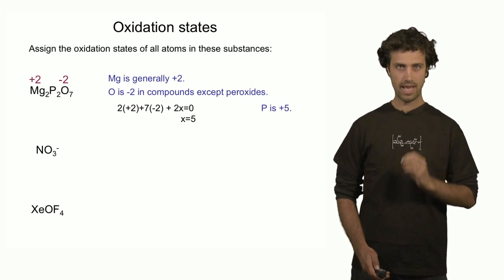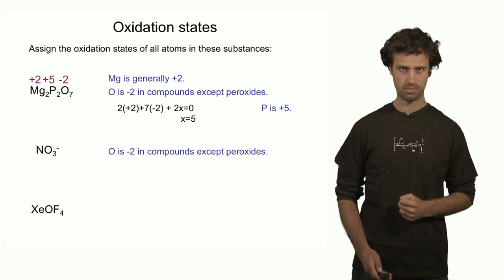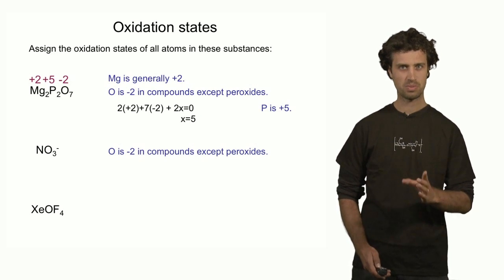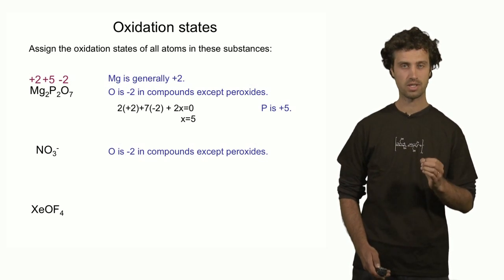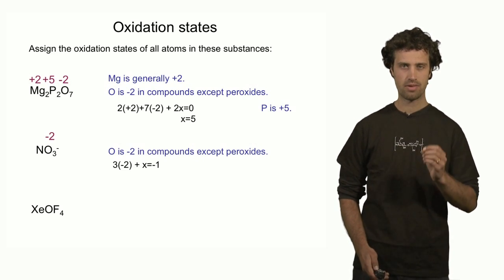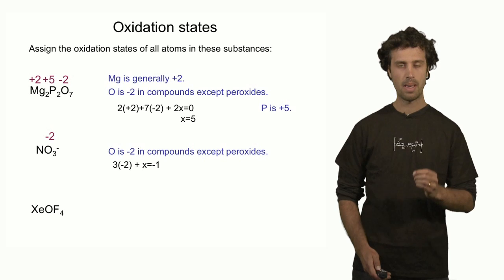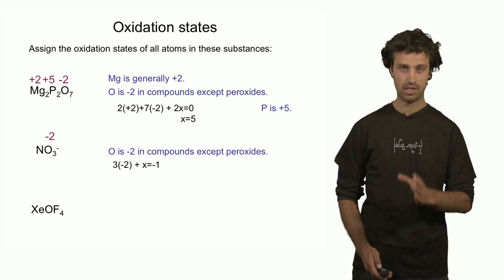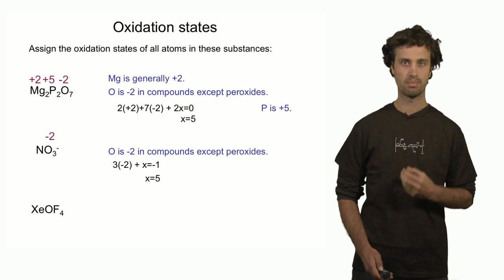The oxygens in the next compound, which is the nitrate anion, again have oxidation state minus two. Now, to find the oxidation state of the nitrogen atom, we must be very careful here, because the overall charge of this compound is minus one. So we set up the following equation: three times minus two plus the oxidation state of nitrogen must equal minus one. Solving for the unknown, we find that the oxidation state of nitrogen in this case equals plus five.